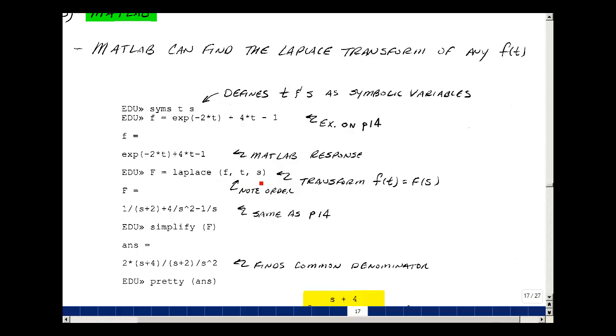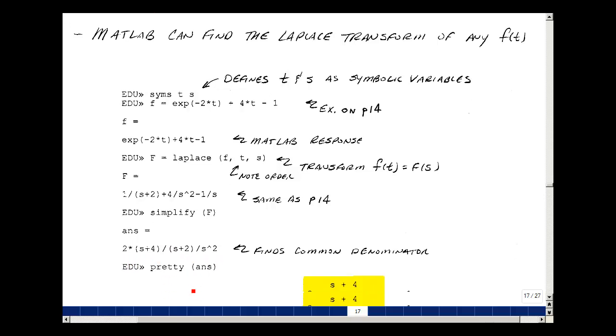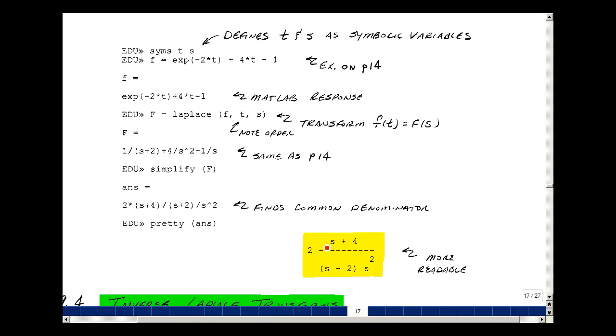When you hit return, you get the value, which is 1/(s+2) + 4/s² - 1/s. Now you can clean this up using the command called simplify. So I'll take simplify of our function F, and it gives us a common denominator. We've got 2(s+4)/(s+2)/s². Make that look fancier using the pretty command, and you get 2(s+4)/[(s+2)s²].